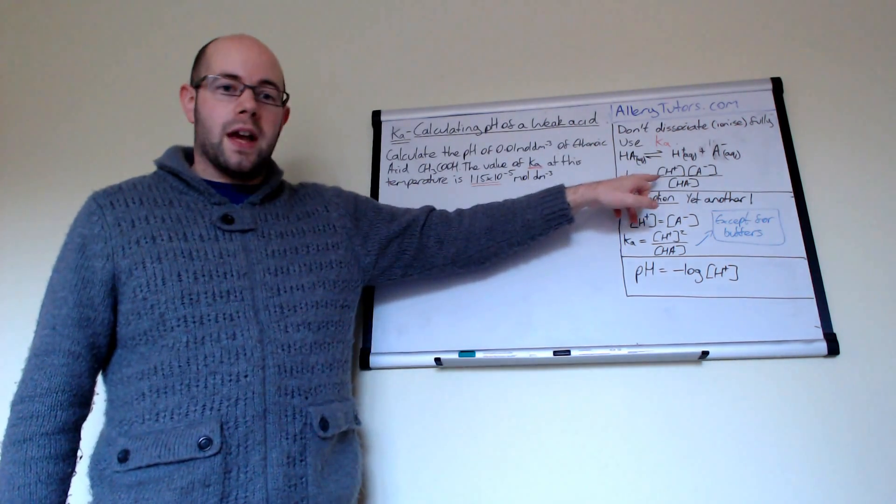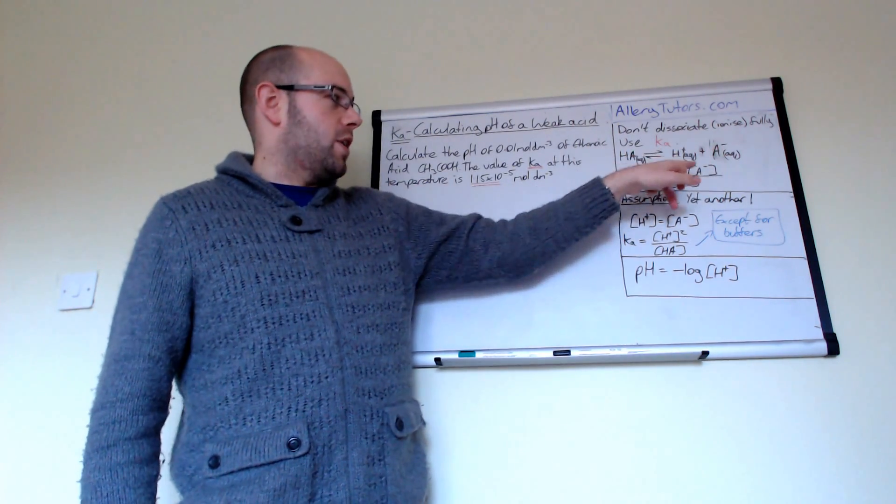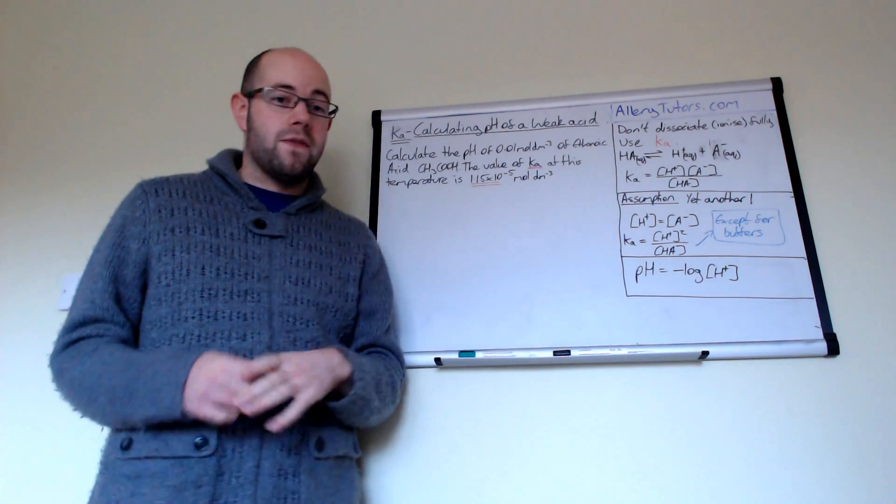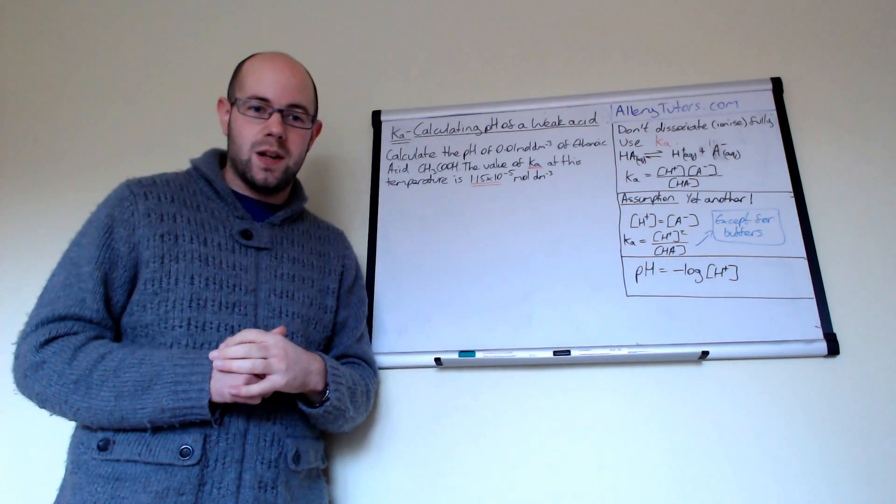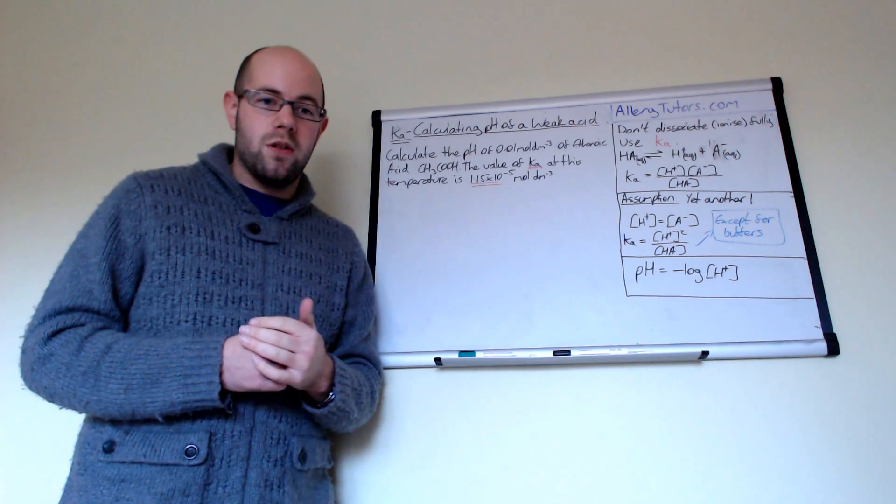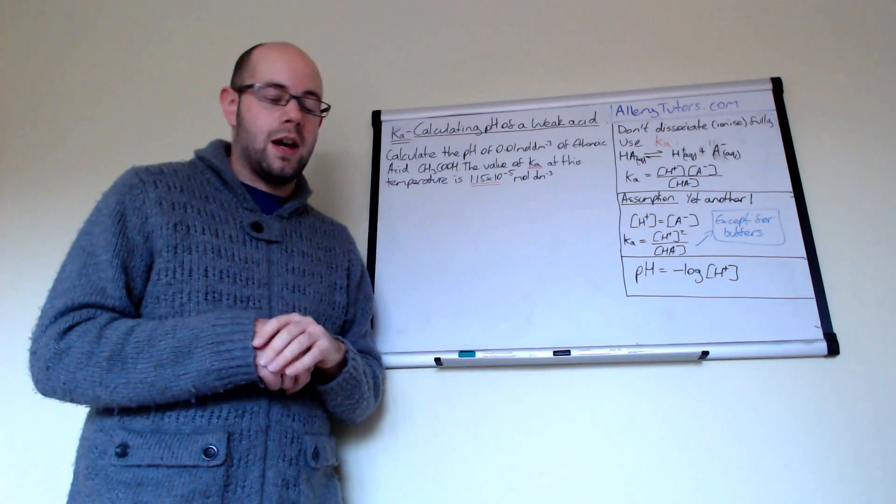So we can represent it like this, where we have H plus and A minus, which are products, divided by our reactant, which is HA. And this is actually very similar to Kc, which is the equilibrium constant. So Ka just looks at the ratio between products and reactants, so it's a very similar idea.